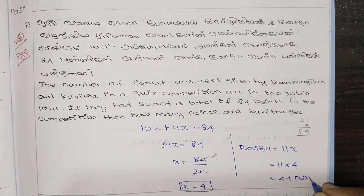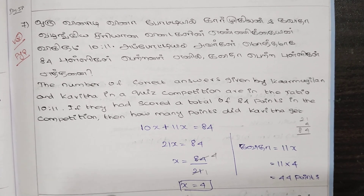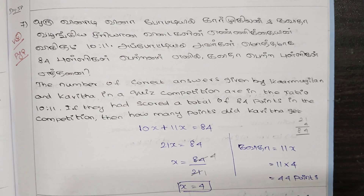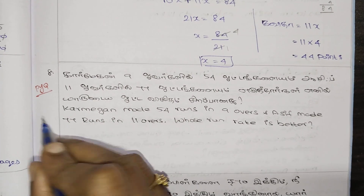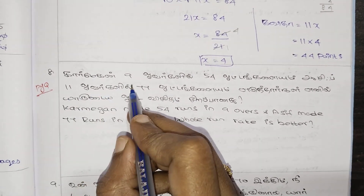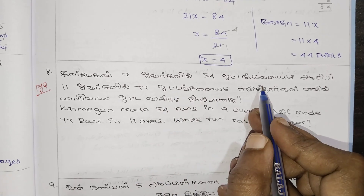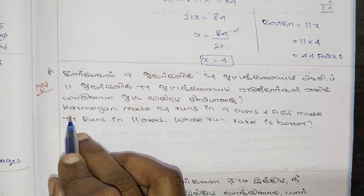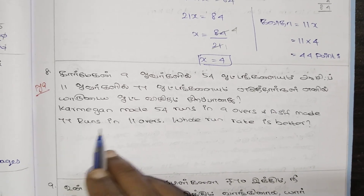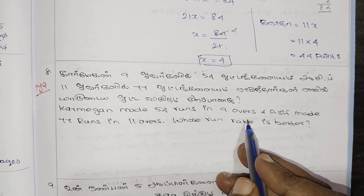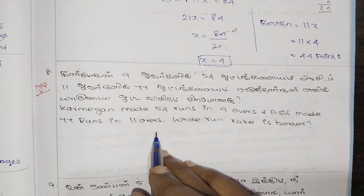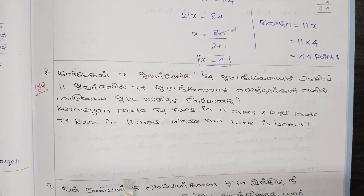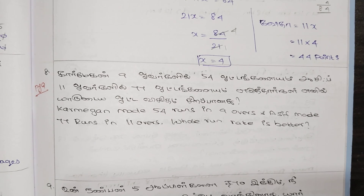So x equals 4. Karmuhilan has 10 times 4, which is 40 points. Kavitha has 11 times 4, which is 44 points. Karmuhilan gets 40 points and Kavitha gets 44 points.